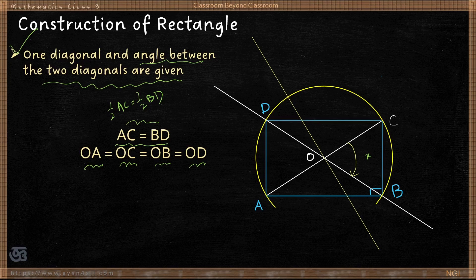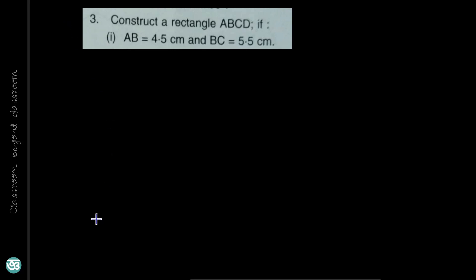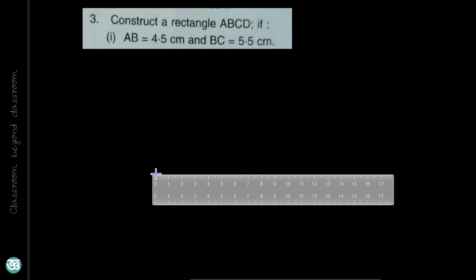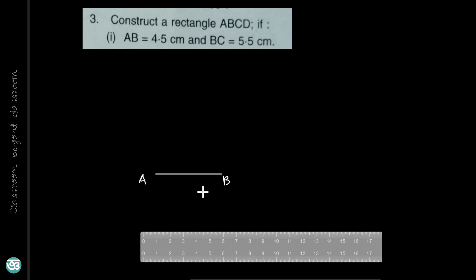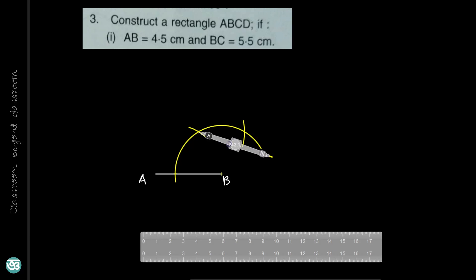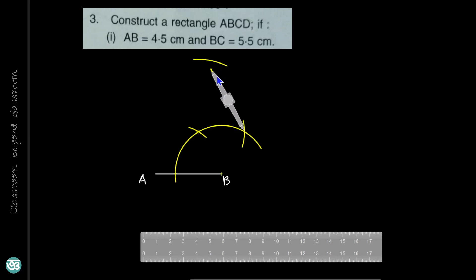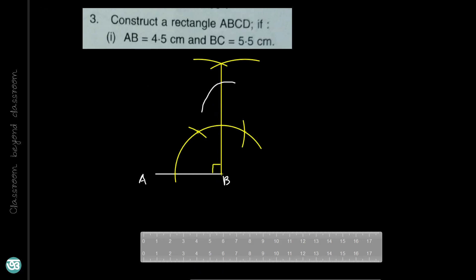Now we solve questions from Exercise 18D on construction of rectangles. Construct rectangle ABCD where AB equals 4.5 cm and BC equals 5.5 cm. Draw side AB of 4.5 cm. Now at point B, construct an angle of 90 degrees. We get two points of intersection; change the radius, draw an arc, then with the same radius draw another arc and join the point of intersection with point B. This gives us the 90-degree angle.